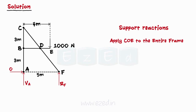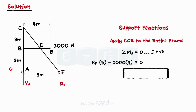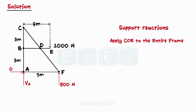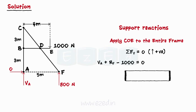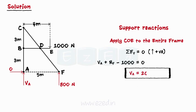Then, we equate the summation of moments of all forces about point A to zero. On simplifying, we get the normal reaction at point F to be 800 N. Then, we equate the summation of all forces in the y-direction to zero, and find that the magnitude of the vertical reaction offered by support A is equal to 200 N.